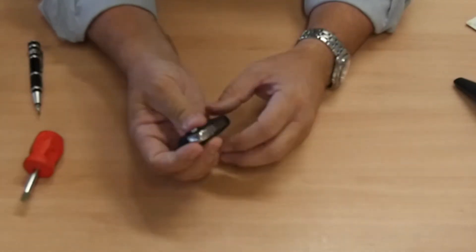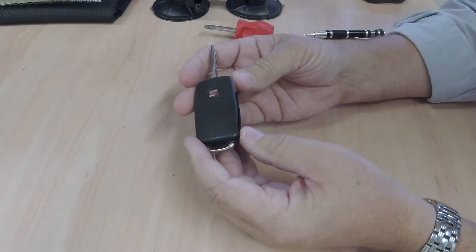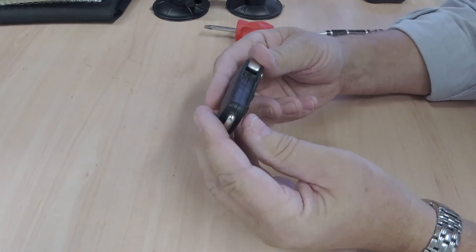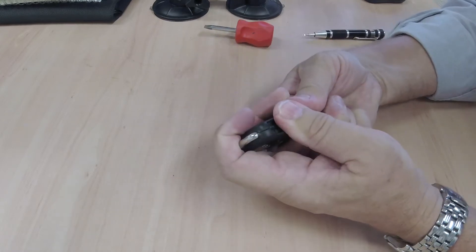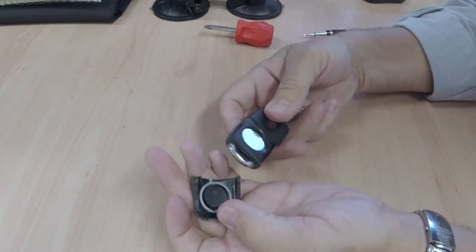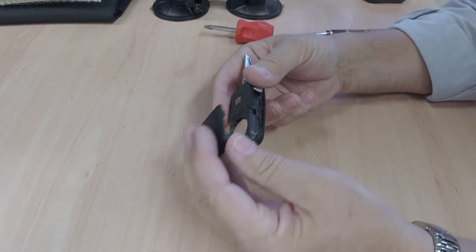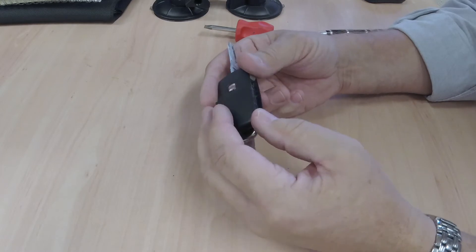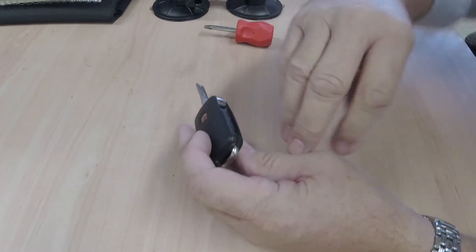Flip the key out by pressing that button, and then using your thumb, press forward. You should be able to do it with your thumb. If not, just get something to lever it, but only lever it gently.